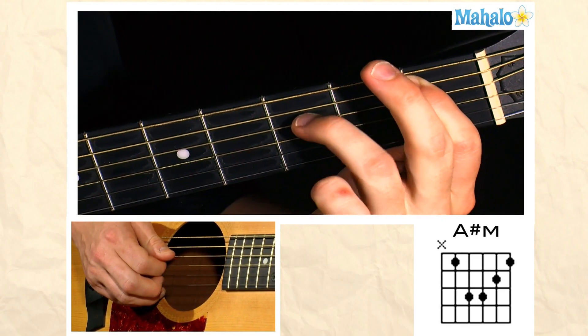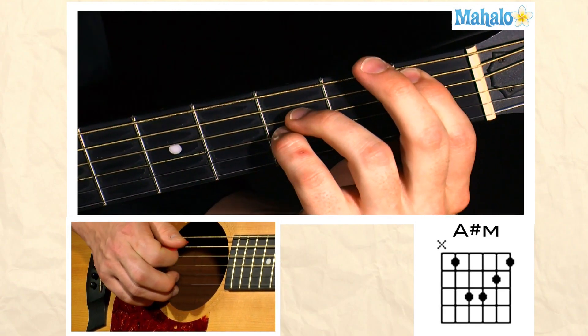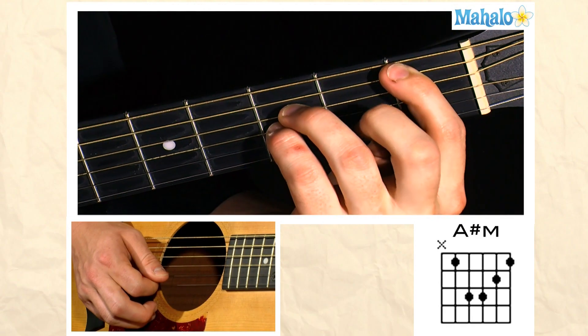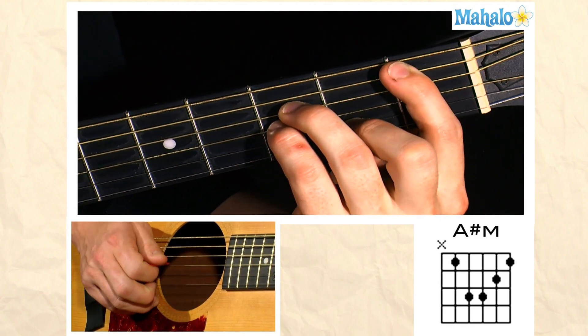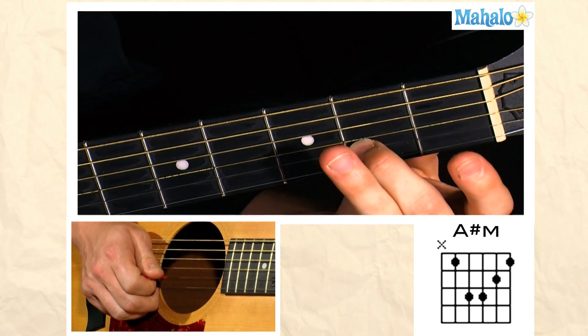We're going to third fret with our third finger, third fret with our fourth finger. Make a stable bass. But how do we turn that into minor? We're going to take this second finger right here and throw it on the second fret of the second string.